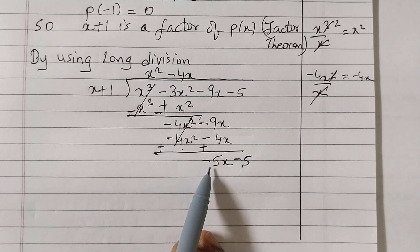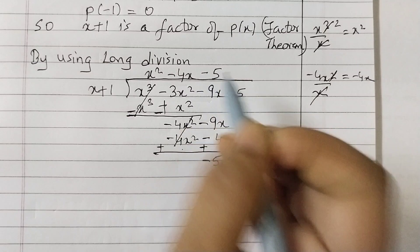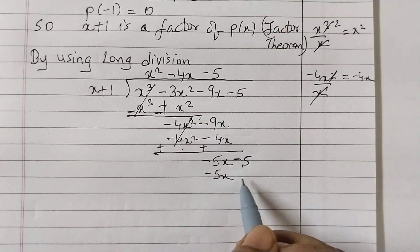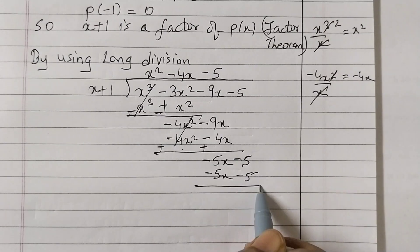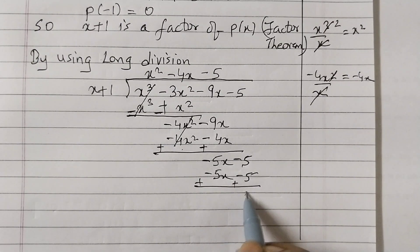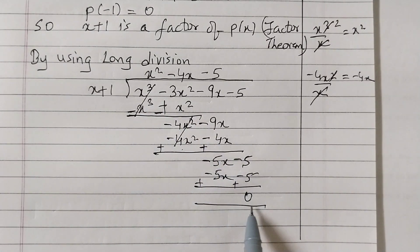Now we can see here if I multiply x by minus 5 I would get the first term. So multiply by minus 5: minus 5x plus 1 into minus 1 is minus 5. Subtract. Same expression here. So that means this is obviously the factor of this given polynomial. So remainder would be 0.